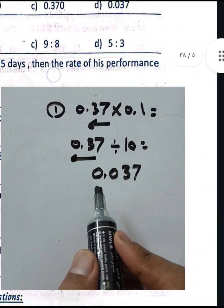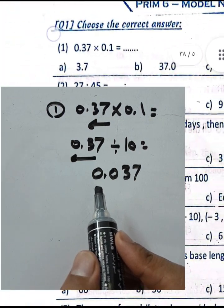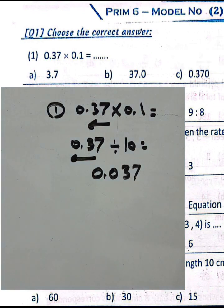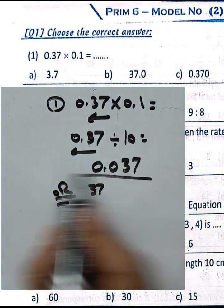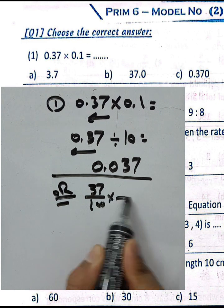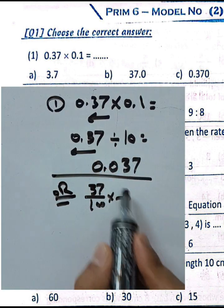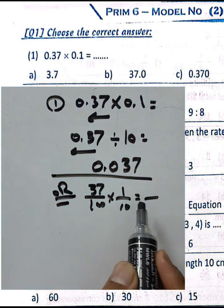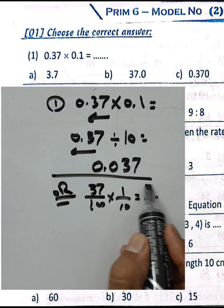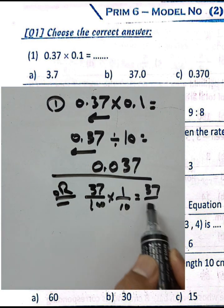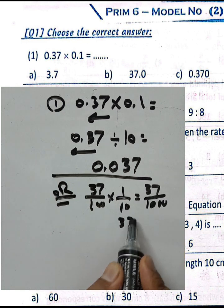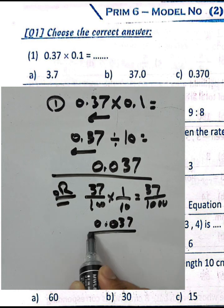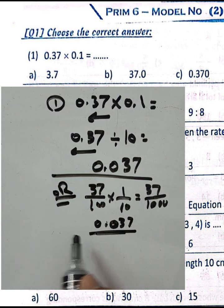Choose letter D. You can also solve this by another method: write 73/100 times 1/10, multiply numerator by numerator to get 37, and denominator by denominator to get 1000. So 37 over 1000 means thirty-seven thousandths. Choose letter D.